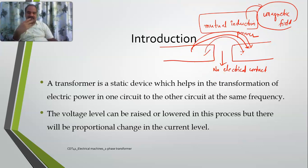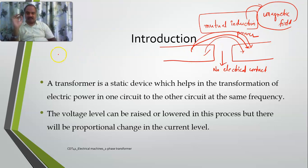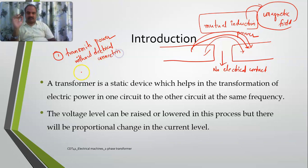The transformer works on the principle of mutual induction, which means the energy is transmitted from one position to another through magnetic fields. So if anybody asks you what is the principle of a transformer, you can easily say it works on the principle of mutual inductance. A magnetic field is set up by one coil through which energy is transferred and then again converted into electrical form.